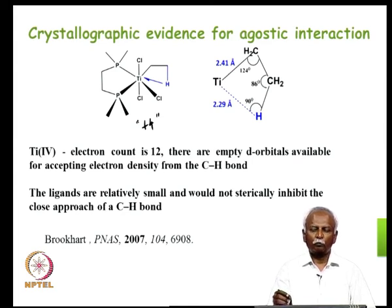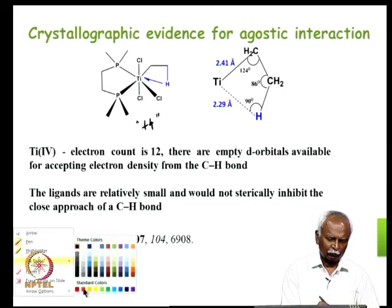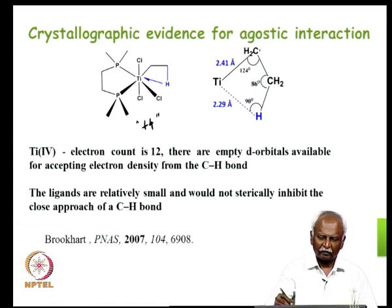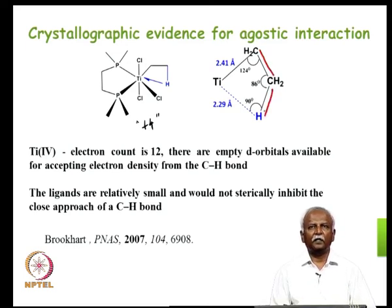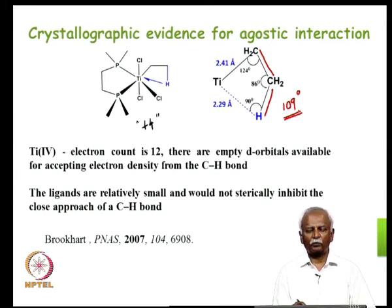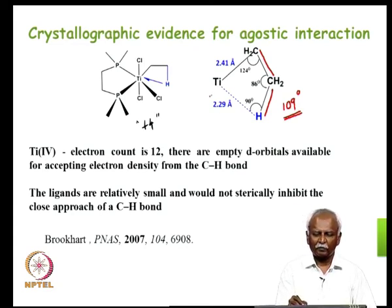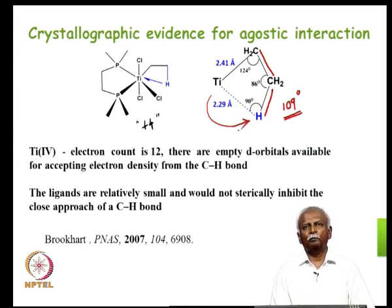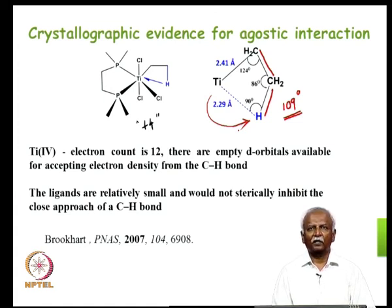The titanium cannot do an oxidative addition because it does not have two extra electrons to pump into the C-H sigma star orbital. But on the other hand it can interact with the C-H sigma bond in an agostic fashion. The bond angle between C-C-H — which should have been 109 degrees for an SP3 carbon — is instead a very acute angle of 86 degrees. That is a significant drop in the bond angle caused by the attractive force that titanium is exerting on this hydrogen. One of the hydrogens is bent towards the titanium and the bond distance is remarkably short — only about 2.3 angstroms — so this bending is arising out of this agostic interaction.